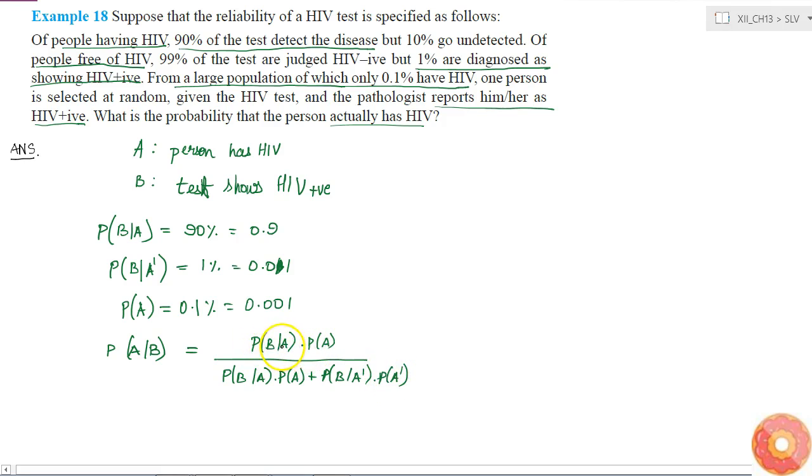Now we know probability of A is 0.001, and probability of B given A is 0.9. Probability of B given A complement is 0.01, and what is probability of A complement?